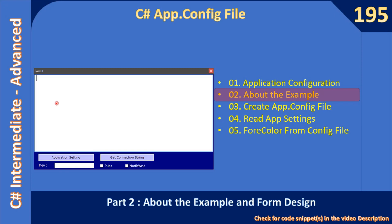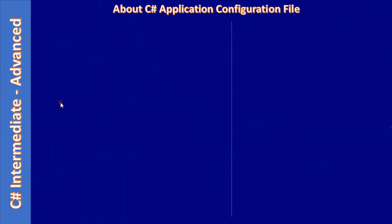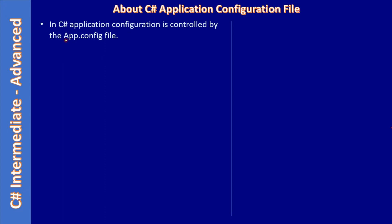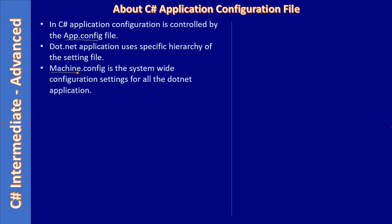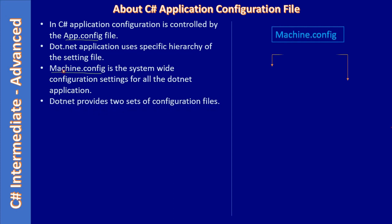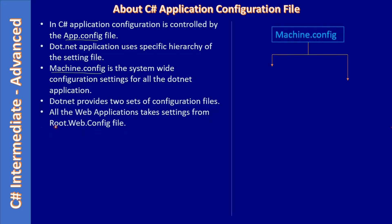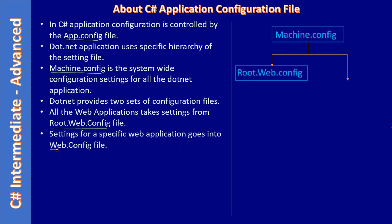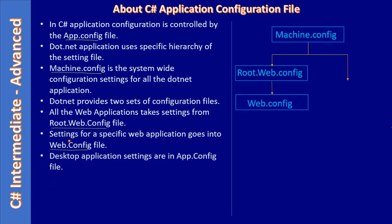Hello friends, welcome to the C# intermediate to advanced tutorial. In this video we are going to talk about an example. In the previous video we learned about the app.config file, the root-level machine.config file, and the web.config file. The root web.config is common for all web applications, while web.config is for a specific web application. Similarly, for desktop applications, the app.config file comes into the picture.